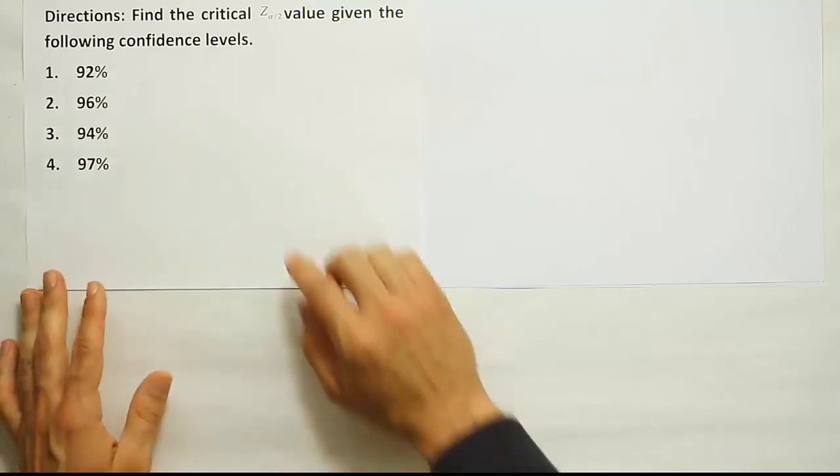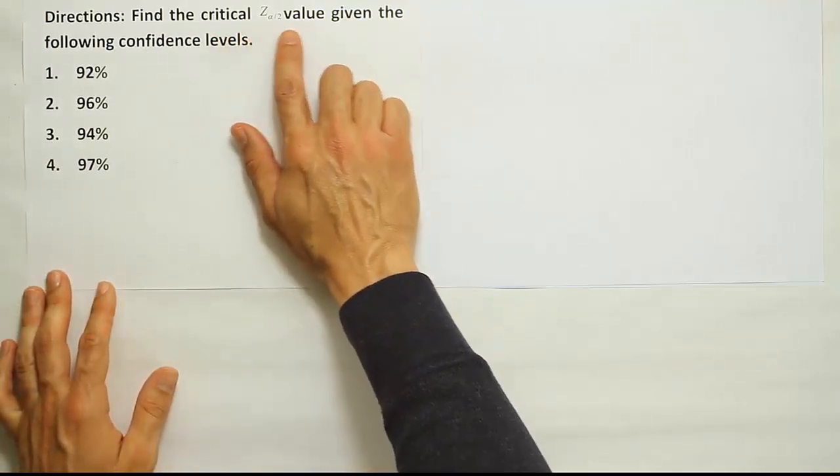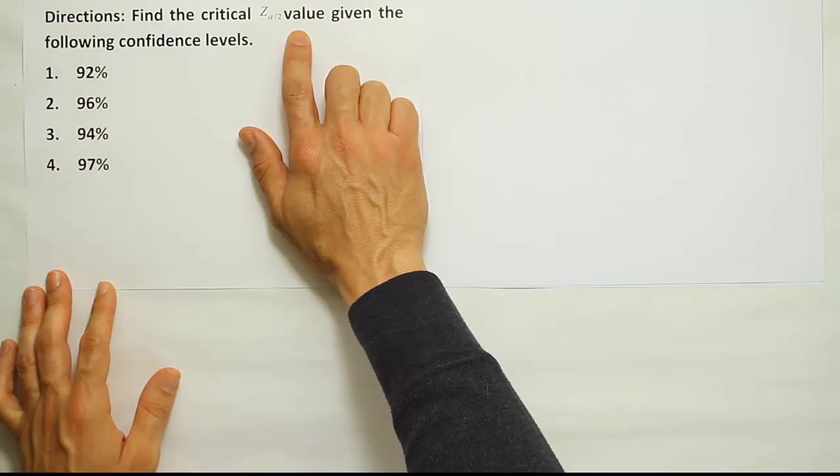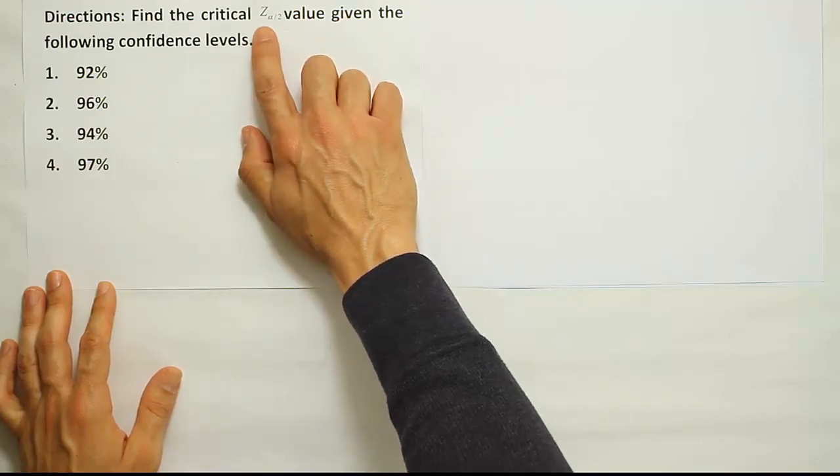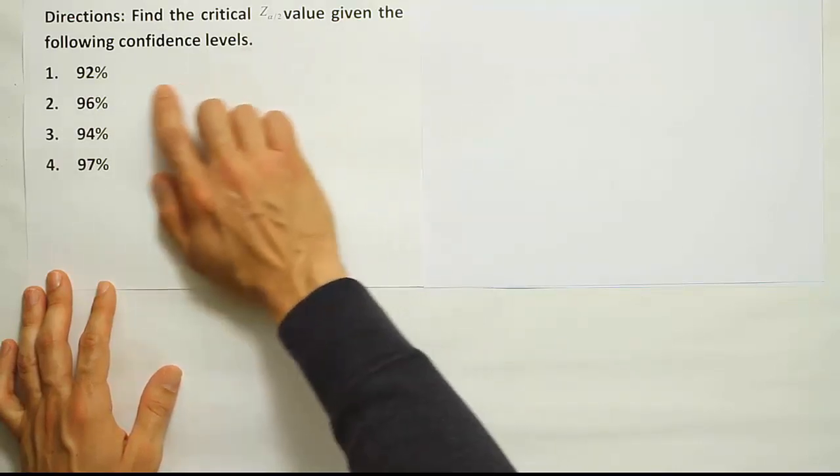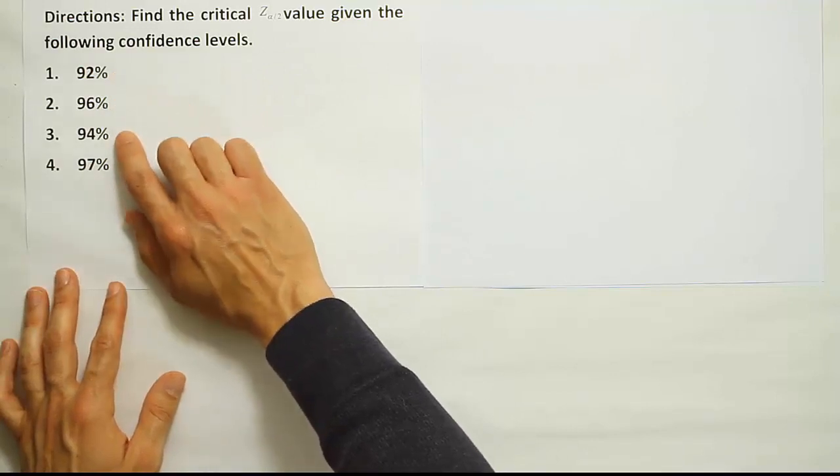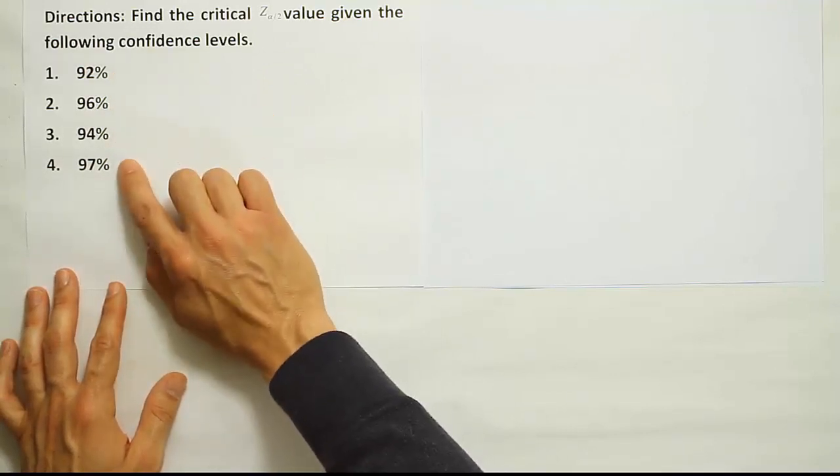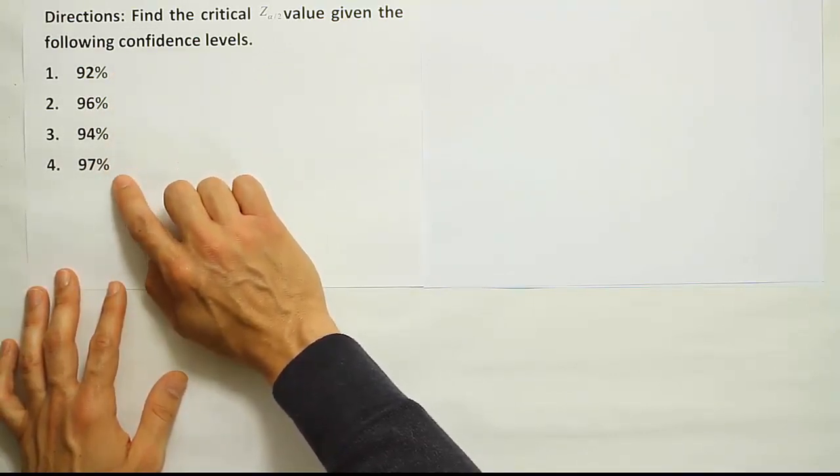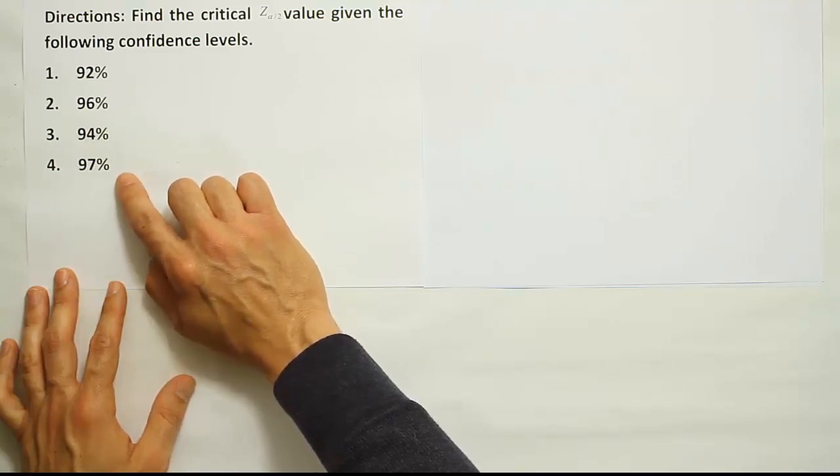So we saw in the last video how to use a t-table to find critical Z alpha divided by 2 values. But now we're going to learn to use the Z table to find these Z values. Each of those values cannot be found on a t-table, so we have no choice but to use the Z table to find them.